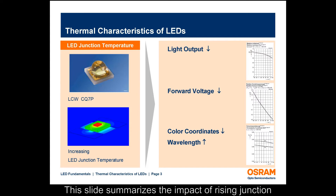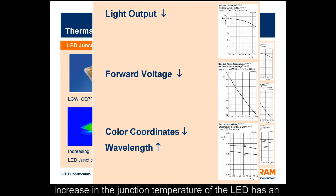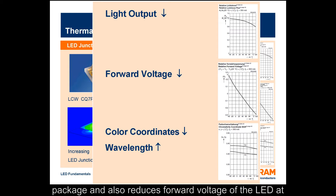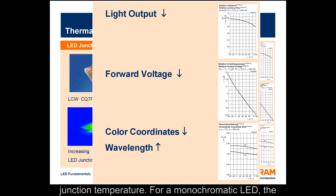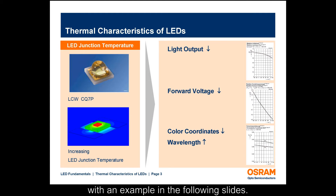This slide summarizes the impact of rising junction temperature — the temperature on the LED die — on the performance characteristics of the LED. An increase in junction temperature has an adverse effect on light output and forward voltage. For a white LED, chromatic coordinates change with rising junction temperature, while for a monochromatic LED, the dominant wavelength increases, causing a shift towards higher wavelengths. Let's look at each of these effects in detail with an example in the following slides.